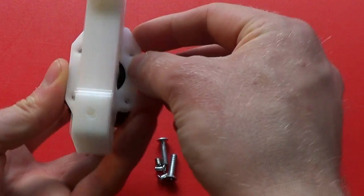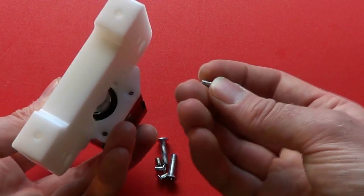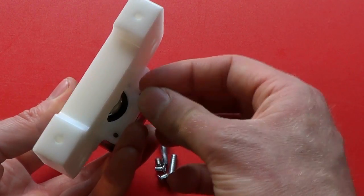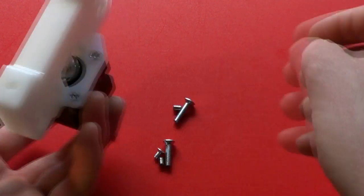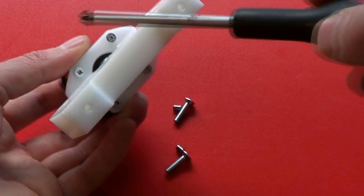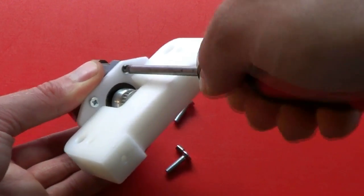Turn the assembly over and secure the motor using the four short countersunk M3 screws. Again, use the posi drive number one screwdriver to tighten them.